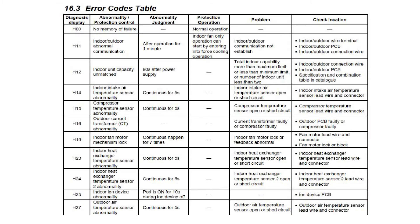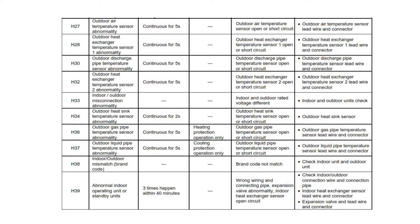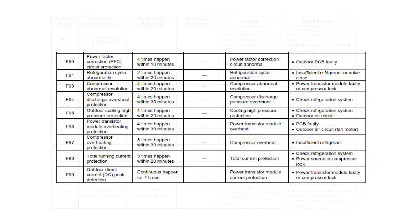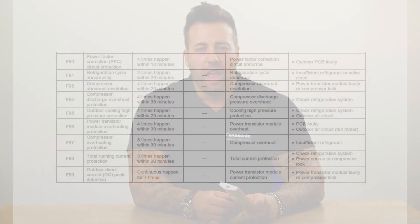So on the screen now is a list of the error codes. You have H error codes and F error codes. And that's how you retrieve the error code from a rack Panasonic residential unit.